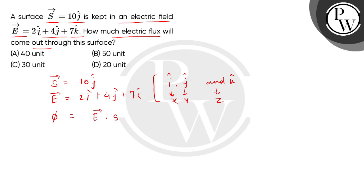The flux expression is equal to the dot product of E vector and S vector. Putting in the values: E vector is 2 i cap plus 4 j cap plus 7 k cap, and S vector is 10 j cap. Now we will apply the dot product properties of unit vectors.